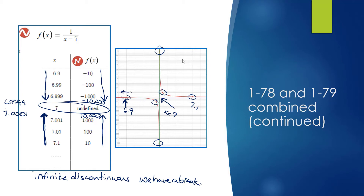The y-scale on this zoomed graph goes from −1,000 to +1,000. As I get closer and closer to the asymptote at x = 7 — which is undefined — I'm approaching negative and positive infinity on each side. Again, that's infinite discontinuity: a break in the graph. A linear equation is continuous with no breaks, which helps illustrate the difference.